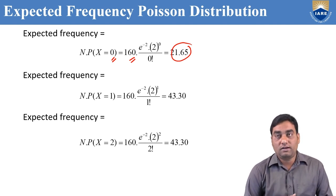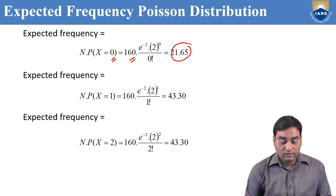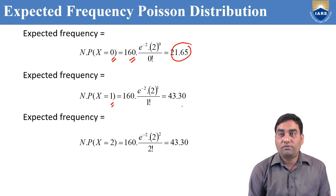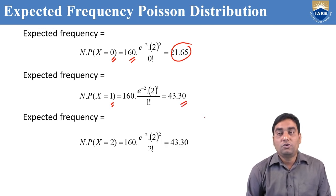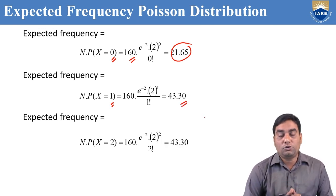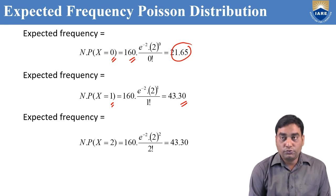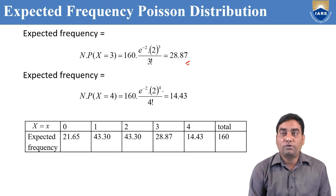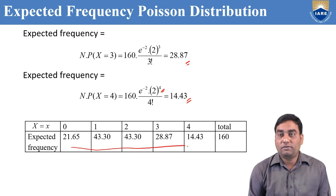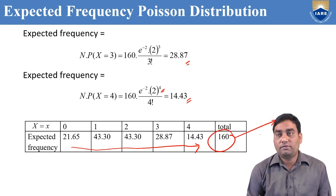If 4 coins are tossed 160 times, for 1 head: 2^1 / 1! gives 43.30. For 2 heads: 43.30. For 3 heads: 28.87. For 4 heads: 14.44. We write all expected frequencies in the table. Adding them gives the same total of 160.